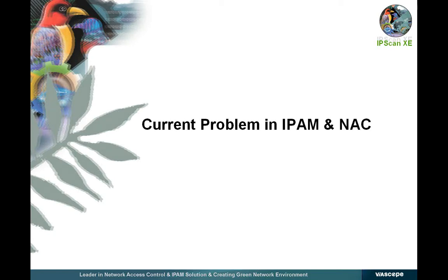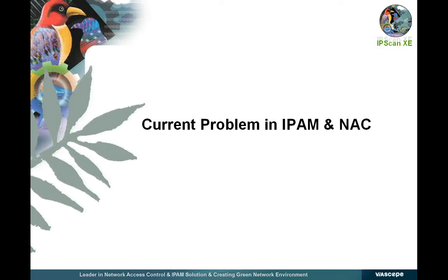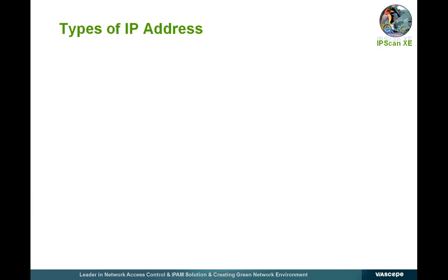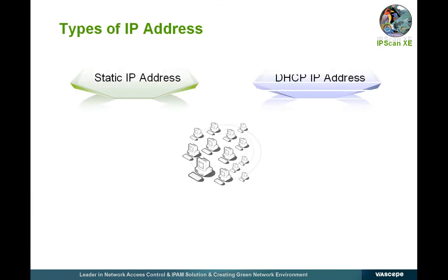Let's look at the issues regarding the IP address management and network access control, the most important part of the in-network management system. The IP address is an essential component for network and Internet access. As the home address for each household, each PC has a unique IP address for data transfer. The IP address is classified in two ways: static IP and DHCP IP.